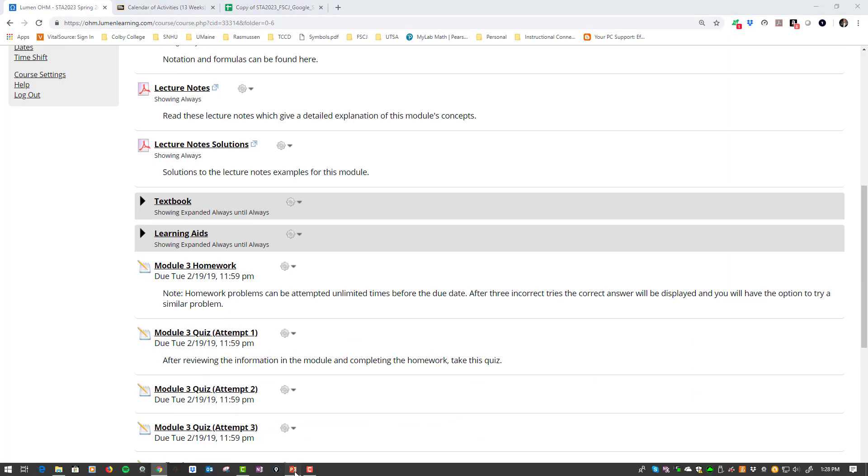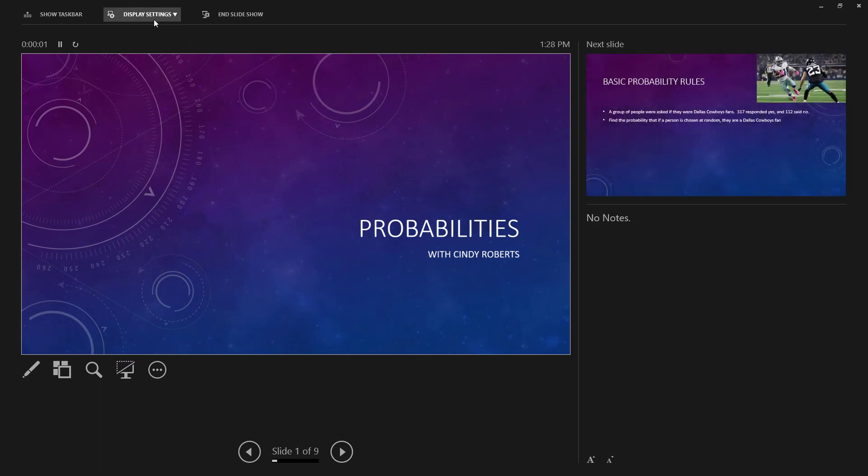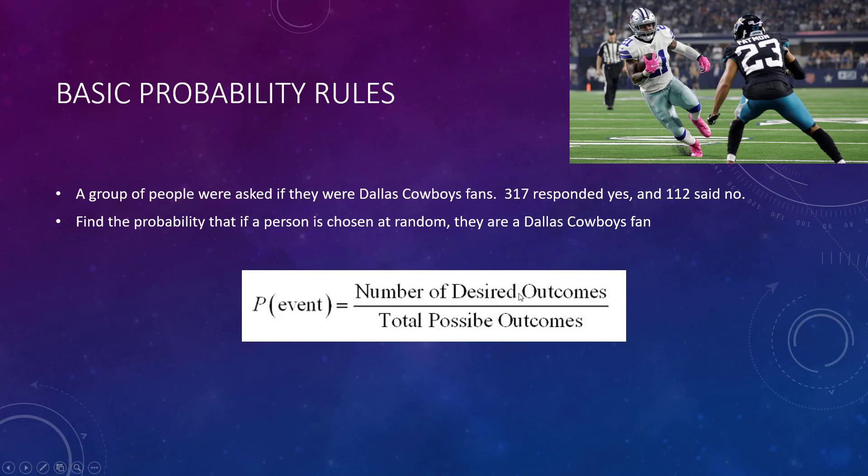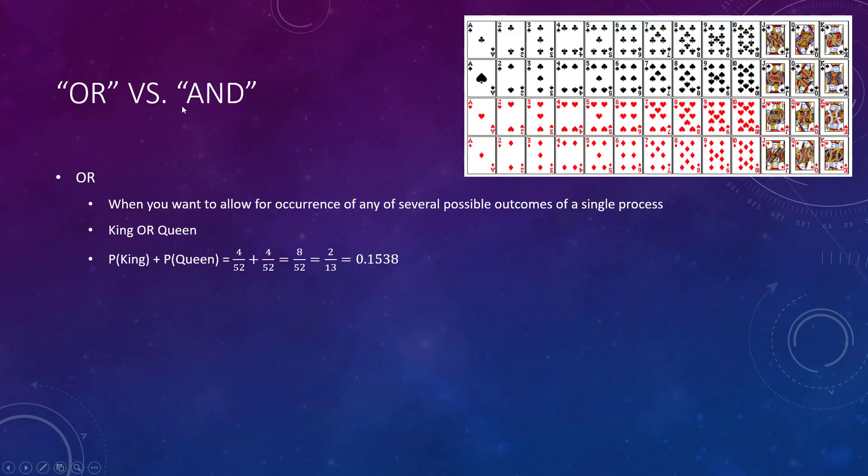Basic probabilities are how I always remember: you're basically taking the number that you want divided by everything that could happen. For example, if I asked a group of people if they were Dallas Cowboy fans, 317 responded yes and 112 said no. That's 317 out of the total that I asked. Typically you're going to leave them as decimal unless it asks you for a percentage.